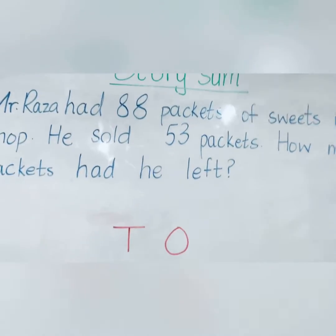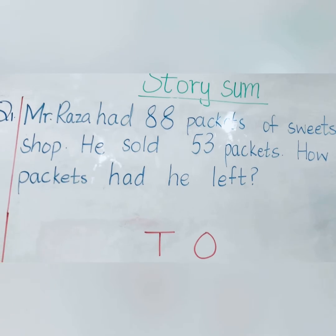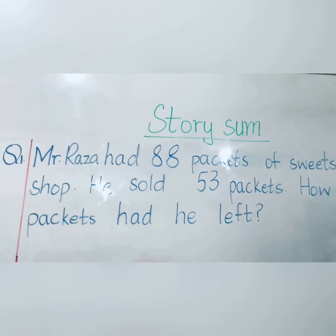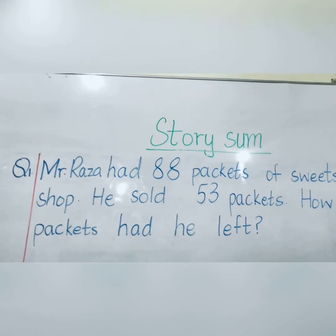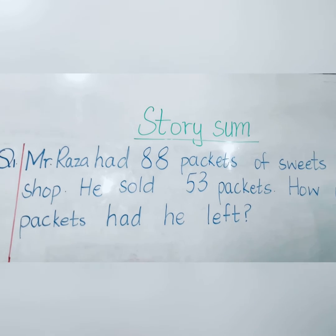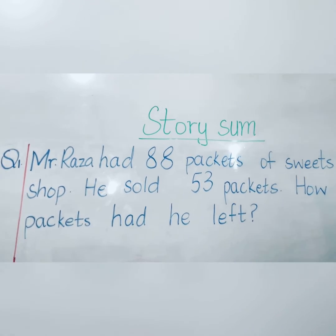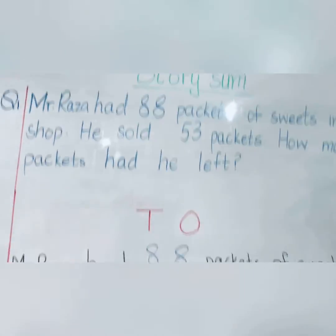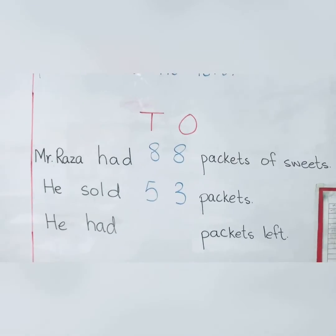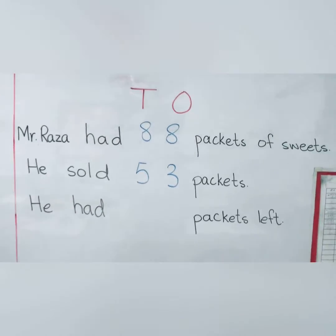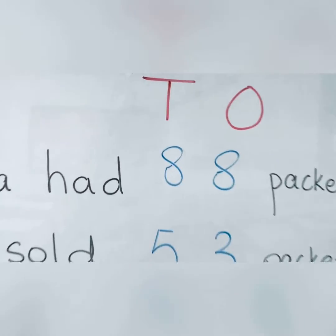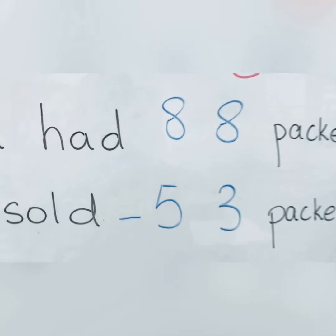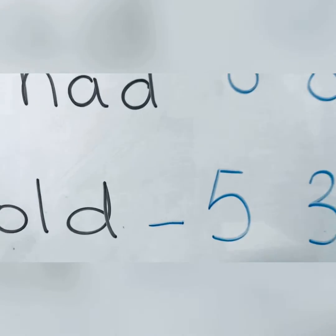The question is: how many packets had he left? From 88 packets he sold 53 packets. We want to find out how many are left, so we are going to subtract. The final statement is: Mr. Raza had blank packets left. Now let's find out how many packets. I am going to subtract 53 from 88. I will write my subtraction sign.